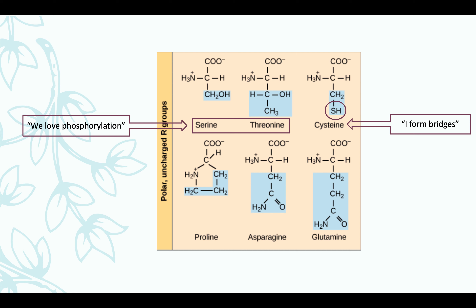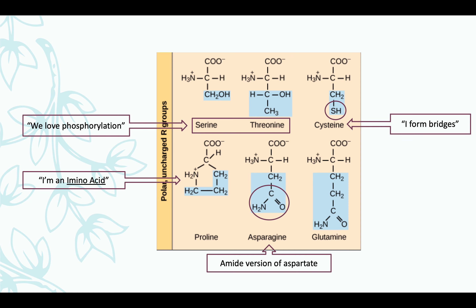Cysteine is known for forming bridges — remember your disulfide bridge. Proline is an imino acid and due to its structure, it is rigid. This is also where hydroxyproline is derived. Asparagine is the amide version of your aspartate.